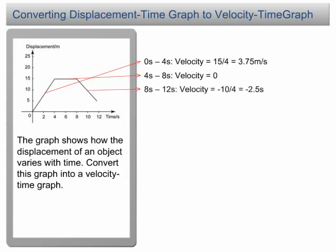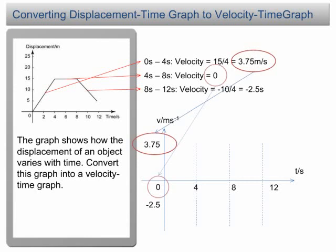From 8 to 12 seconds, the velocity is negative 10 over 4, or negative 2.5 meters per second. Draw the axis of the graph. Write down the scale for horizontal axis and vertical axis. And lastly, sketch the line of the graph.